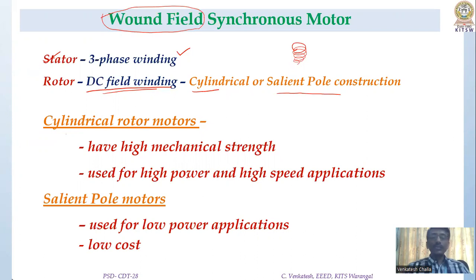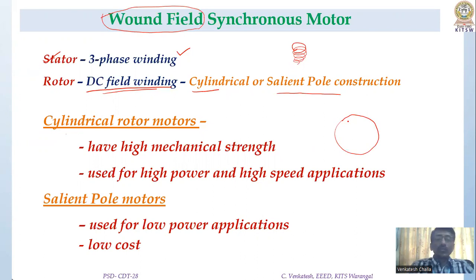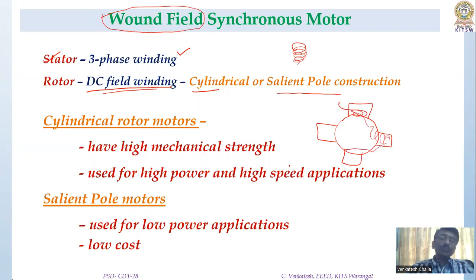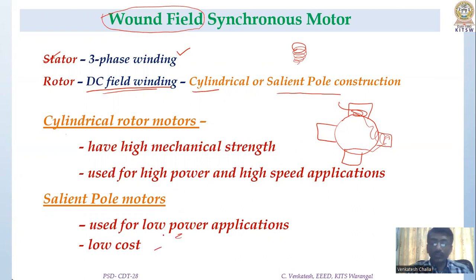Cylindrical rotors have high mechanical strength and are used for high power and high speed applications because they have a smooth surface. For salient pole type, the field poles are projected outward with field winding provided on them. Salient pole motors have a non-uniform air gap and therefore are used for low power and low cost applications.